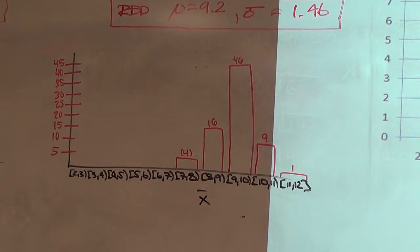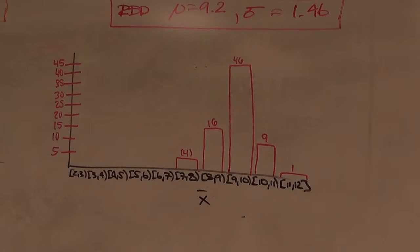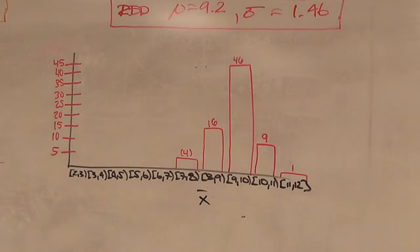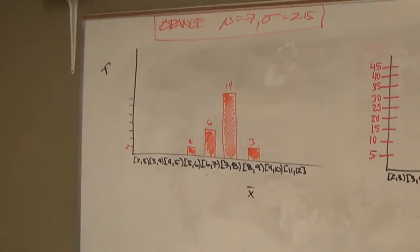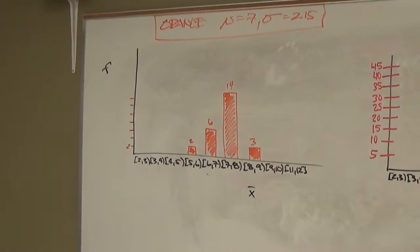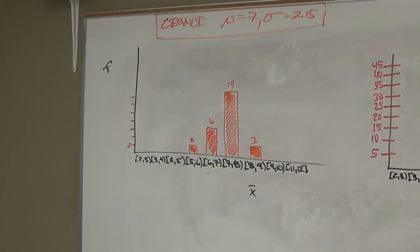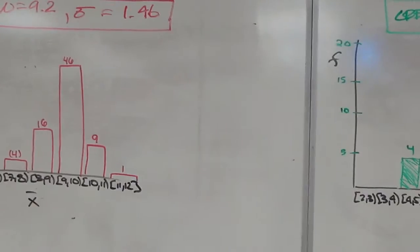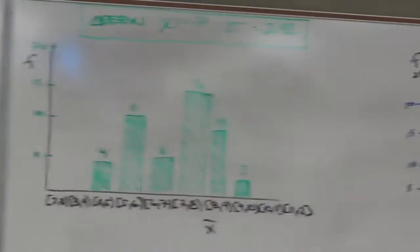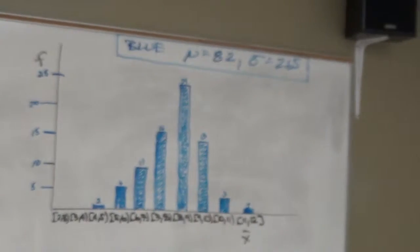Locate for each of the distributions where the height of the bell curve is. Let's look at orange first. Where's the height of that bell curve? Between 7 and 8. How about the height of this red one? 9 to 10. Green one? 7, 8. Blue one? 8, 9. And yellow one? 4, 5.